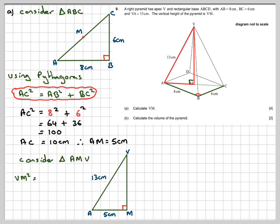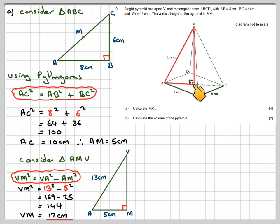So VM squared, which is the one I need to find, is going to be the longer side VA squared minus AM squared. To repeat, in order to find this length here, you need to do this side squared minus this side squared, because this is one of the smaller sides of the right angled triangle. That's going to be 13 squared minus 5 squared, 13 squared is 169, 5 squared is 25, that gives 144. Therefore VM will be the square root of that, which is 12 centimetres. So the vertical height of the pyramid is 12 centimetres.